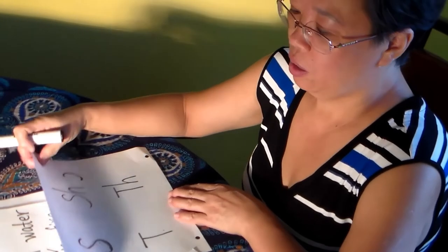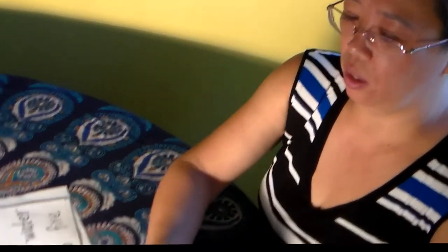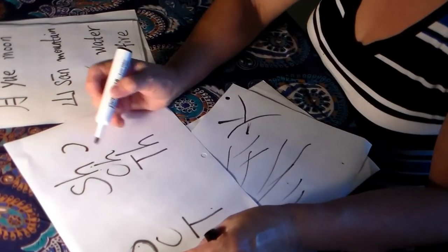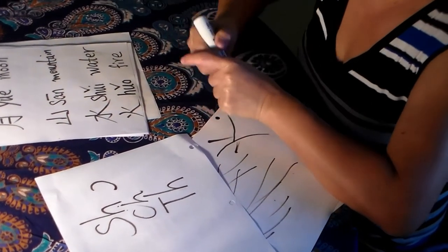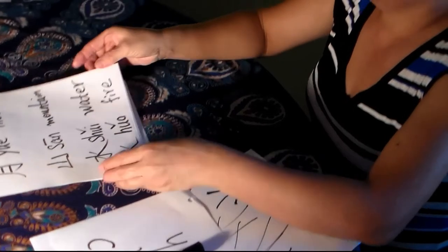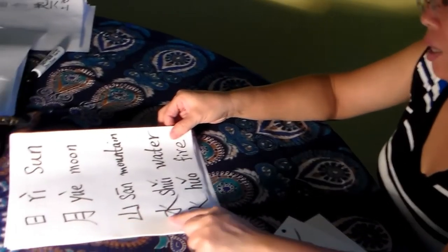In the future there's a lot of C, CH, other things. You know, this is, so today we learn ri, yue, shan, shui, huo.